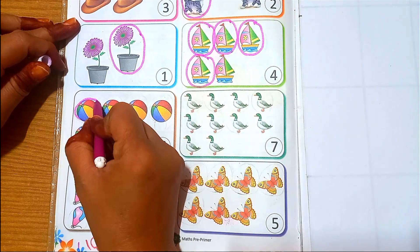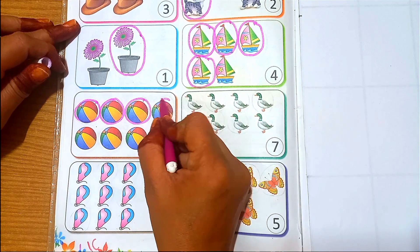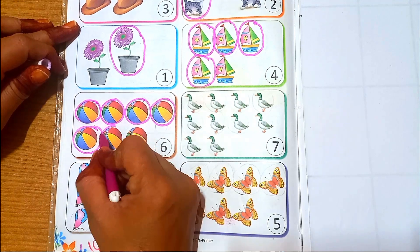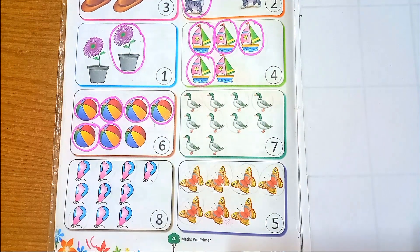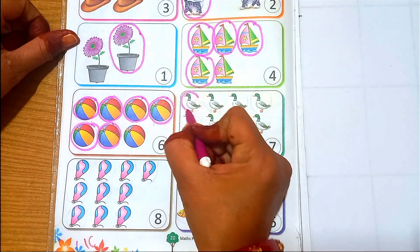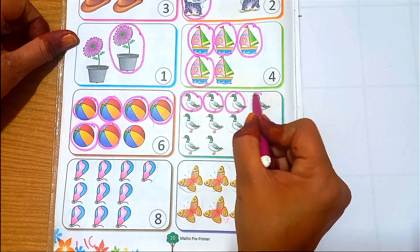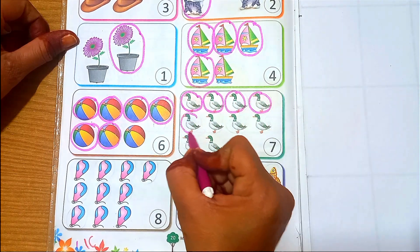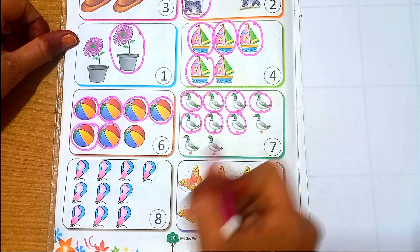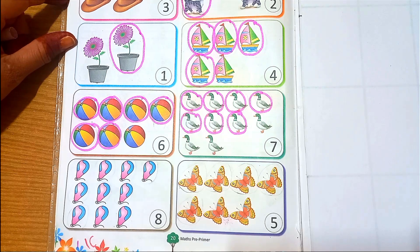Balls. Six balls. One, two, three, four, five, and six balls. Next, duck. Seven ducks. One, two, three, four, five, six, and seven ducks. Next, balloon. Eight balloons.